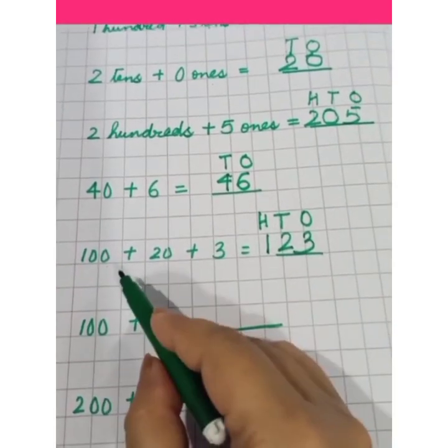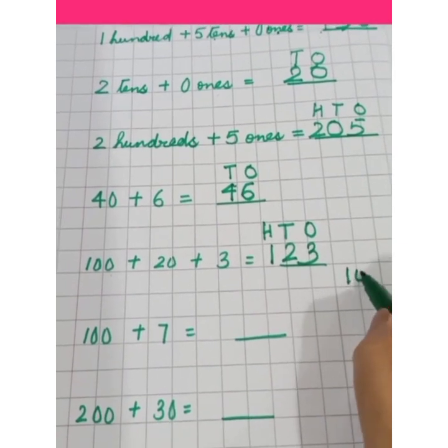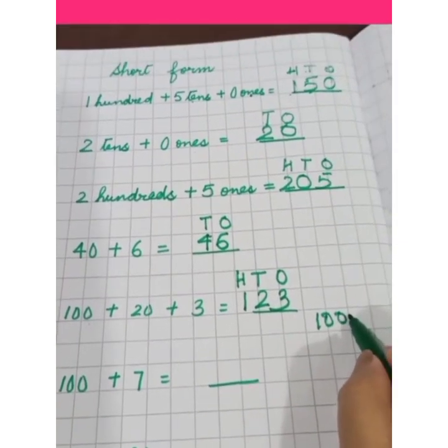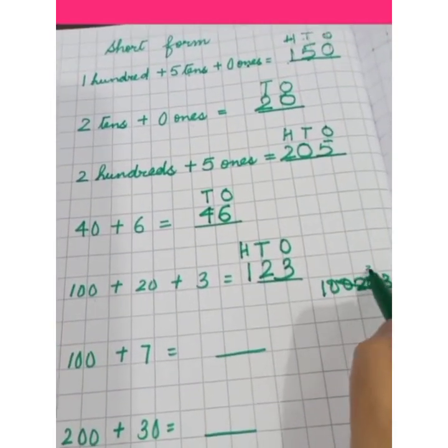What mistake you make is 100 plus 20 plus 3, you write in short form like this 100, 20, 3. This is wrong.